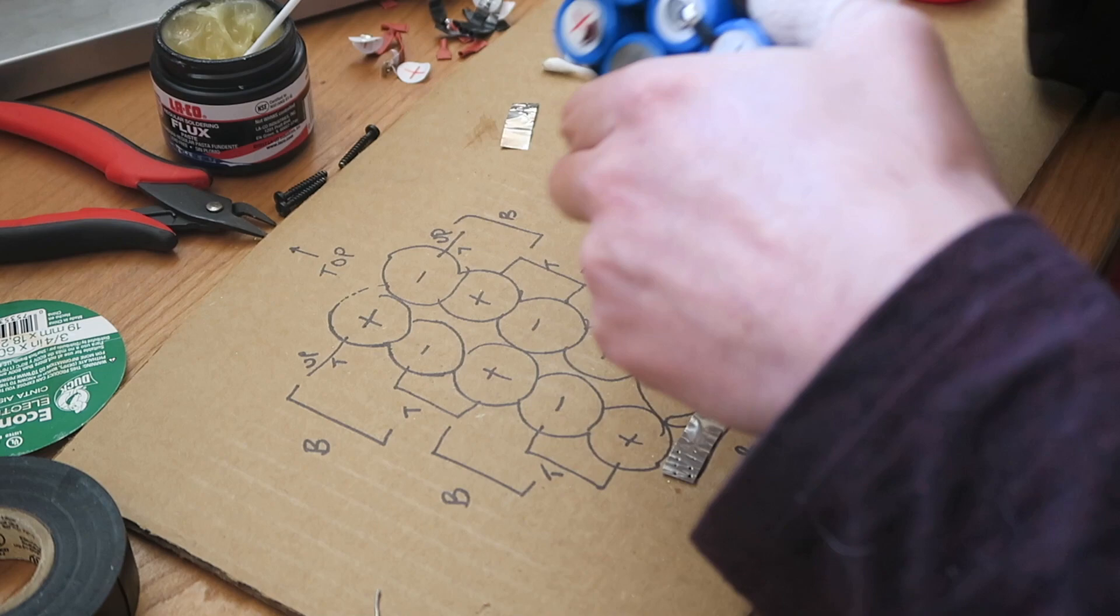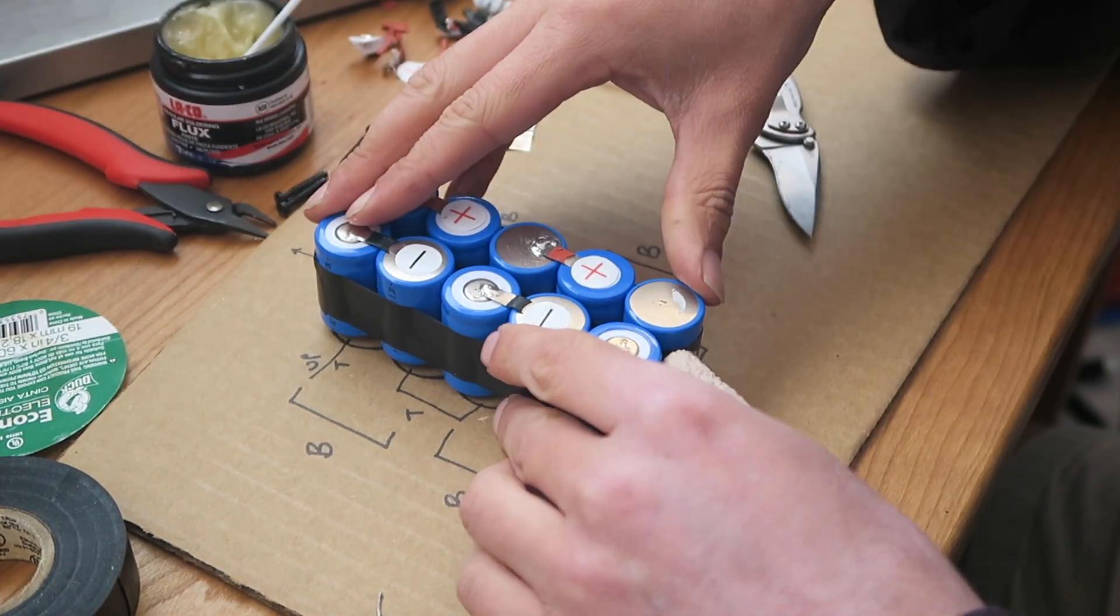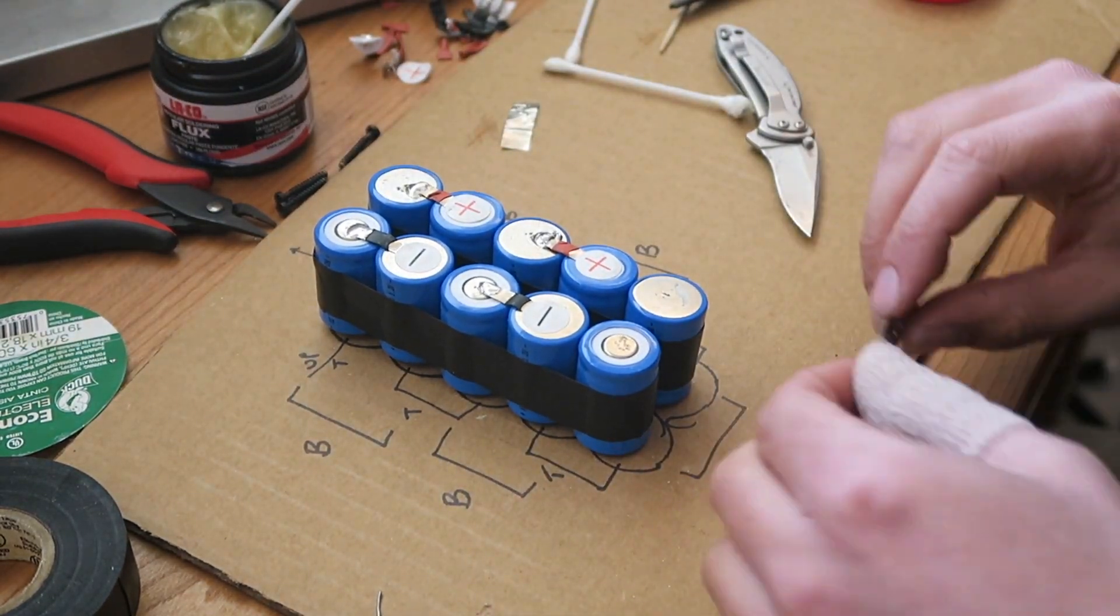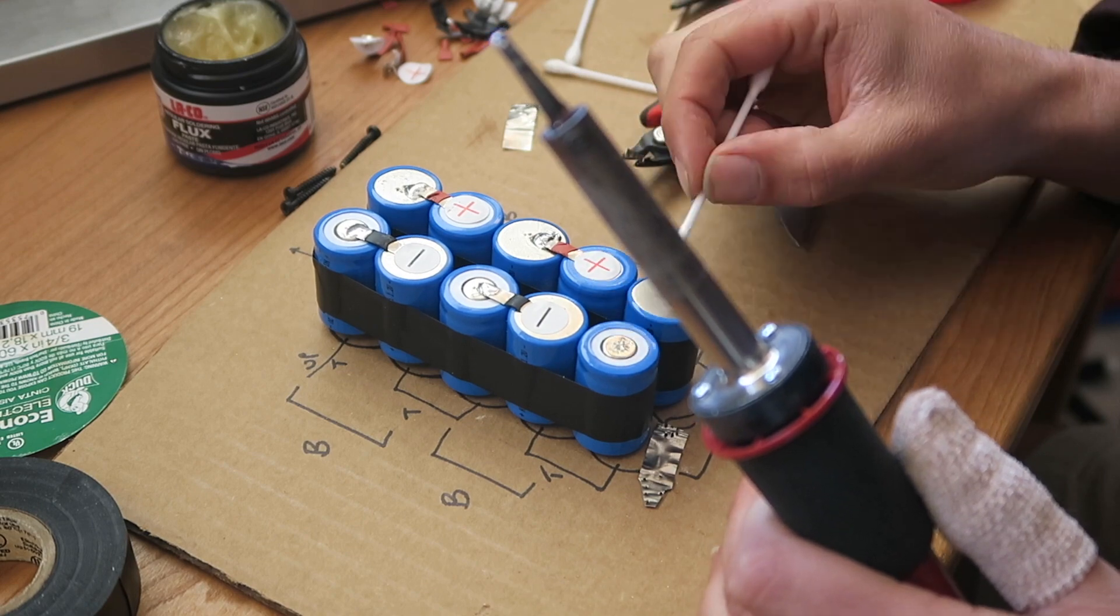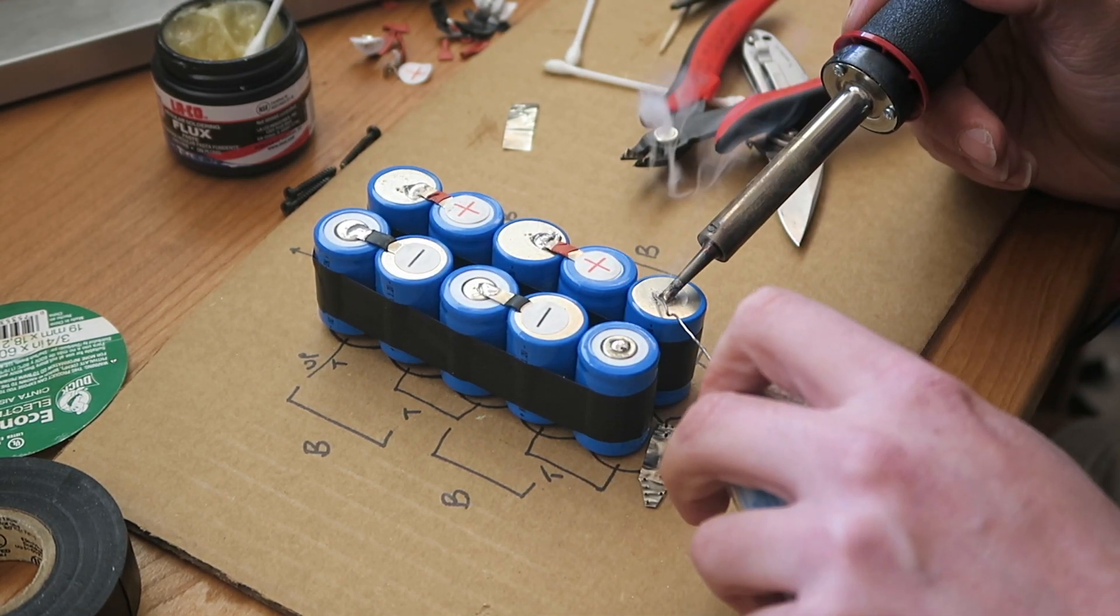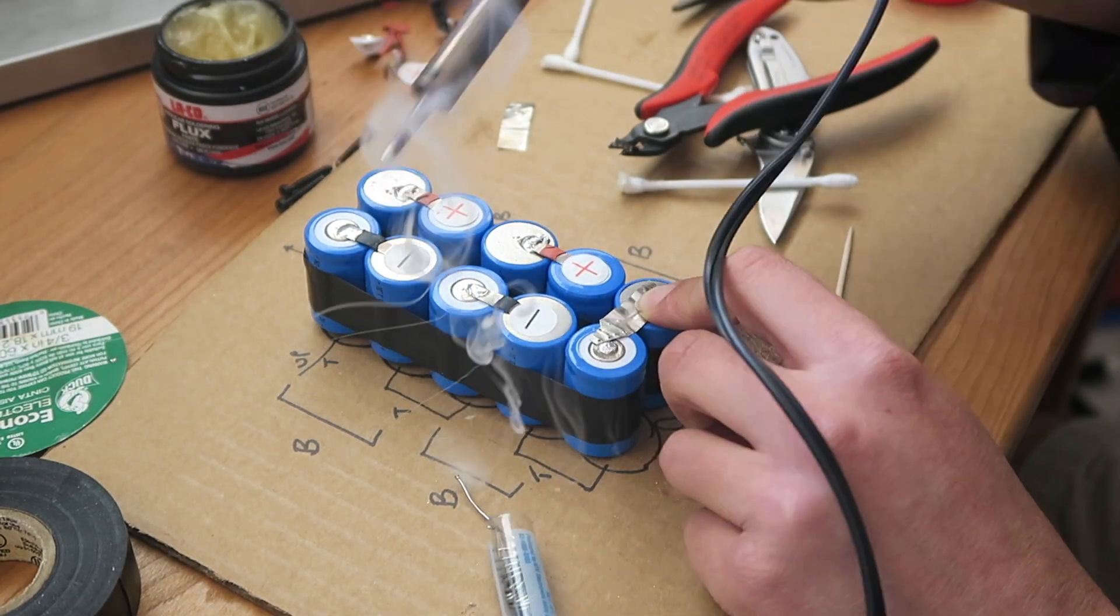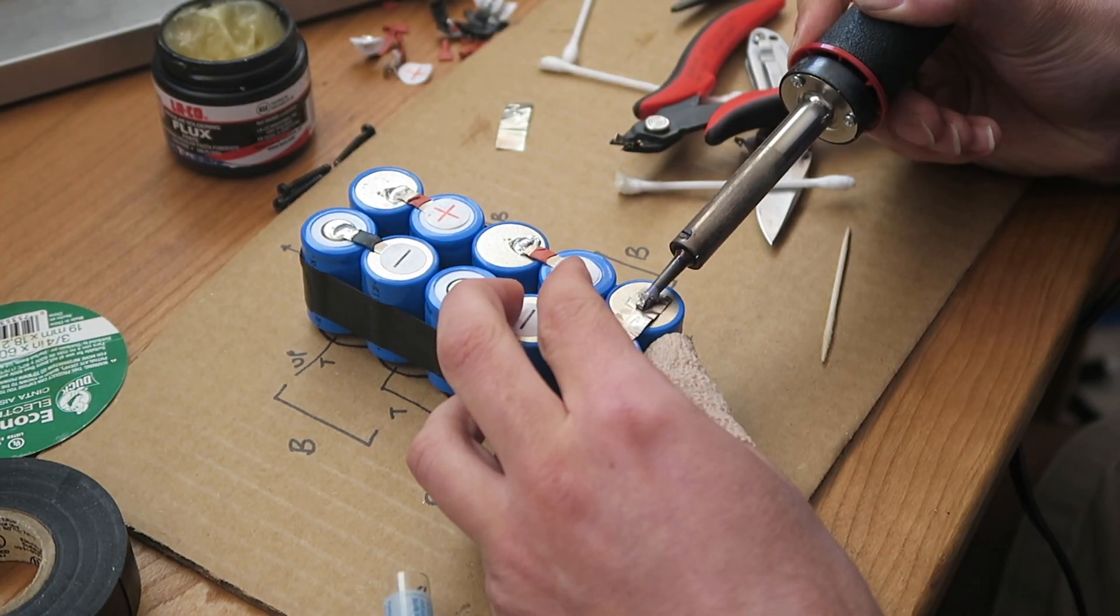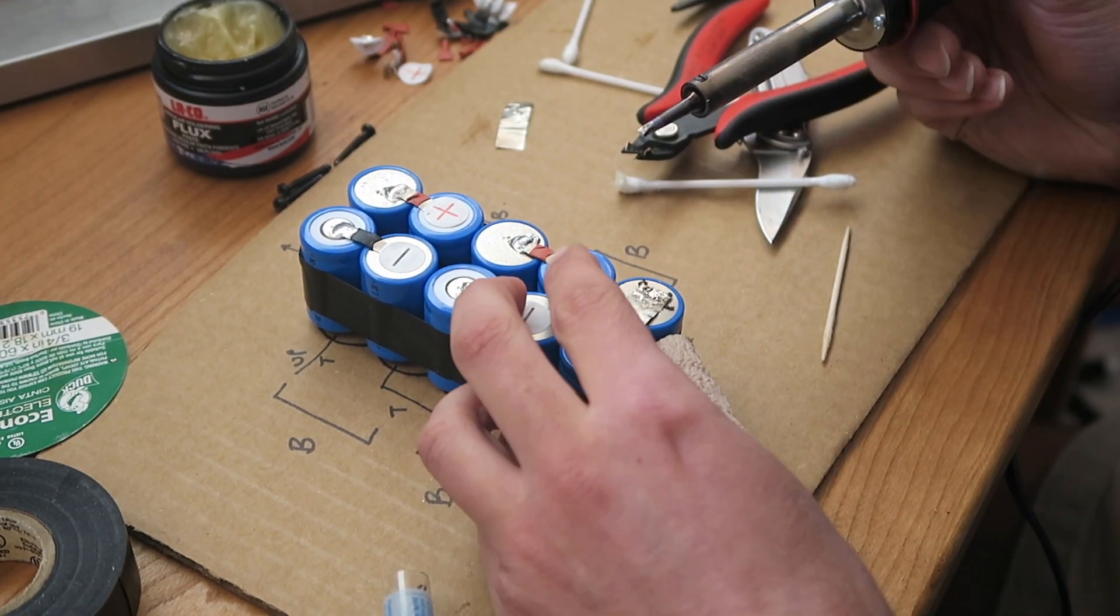And then, finally, you're going to attach the tab that connects the two sides of the battery together. I used a strip from the old battery, again repeating the same process. Apply solder to the battery. And then, apply some flux to the tab. And go ahead and solder the tab in place.